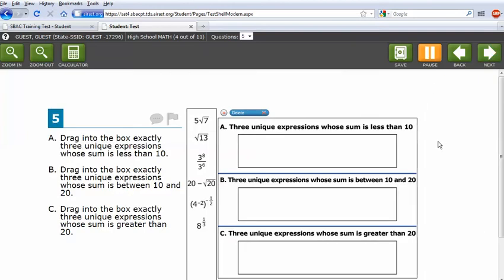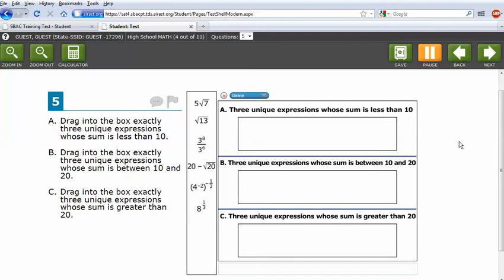Love this question. Very high level. It's really going to mess up our learners. Drag into the box exactly three unique expressions whose sum is less than 10, and 20, and greater than 20. That is a very tough question. Requiring a really solid understanding of exponents, fractional exponents, negative exponents. It's a tough question.